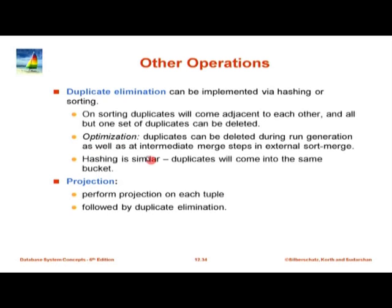Duplicate elimination can also be done using hashing. Use hash partitioning to break the relation into pieces that each fit in memory. Build a hash index on the relation. As you build the index, if a tuple is already present, it is a duplicate — throw it away. If it is not present, add it to the index and output it. Very simple.